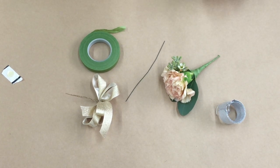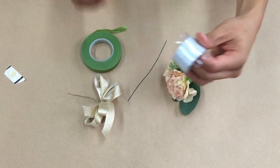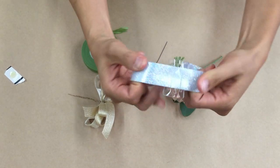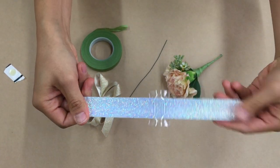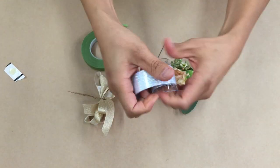Welcome to our Bluminous how-to video. Today we'll be making a wrist corsage using our slap band. It just goes around your wrist like that.